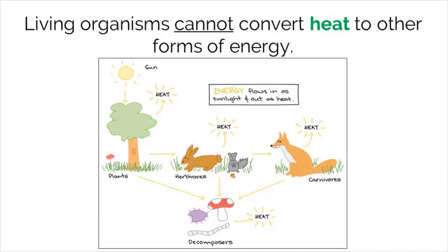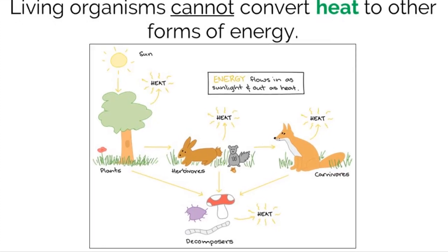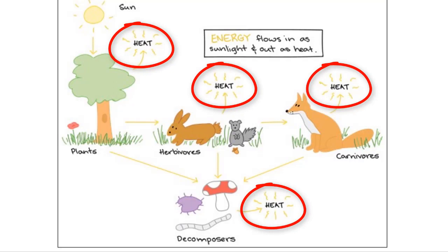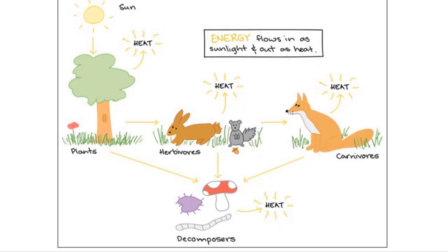Remember when I said energy enters and exits? Well, this is how it exits. Organisms radiate heat into the atmosphere that is lost to the ecosystem. The good news is, we still have sunlight bringing in more energy to support the needs of the communities.